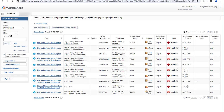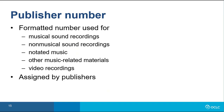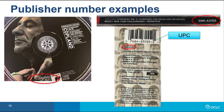You can return to the enhanced search results display by clicking view enhanced search results. Publisher numbers can be found on musical and non-musical sound recordings, printed music, and video recordings. They're assigned by publishers and there is no standard format. Searching by publisher number can be efficient since these kinds of materials often have very common words in the title, and determining the author, publisher, and date can sometimes be difficult. In this example from an audio compact disc, the publisher number is SMK63155, and it's on the disc as well as on the spine of the case and the back of the case. The case also has a universal product code, or UPC.